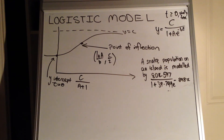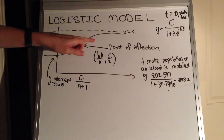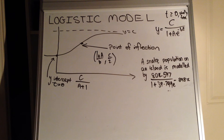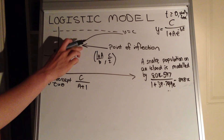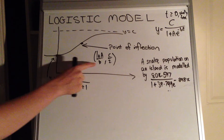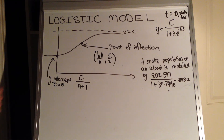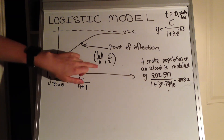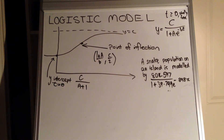The point of inflection is simply where that trend changes — where the rate of increase stops increasing and starts decreasing. There will be more and more snakes coming onto the island, and then after a while, fewer snakes are added per year. The population still goes up, but at a decreasing rate. The point of inflection is given by ln(A)/B for the t-coordinate and C/2 for the population value. This is a mathematically proven rule for logistic models, so you don't need to differentiate twice to find it — the second derivative equals zero at this point.